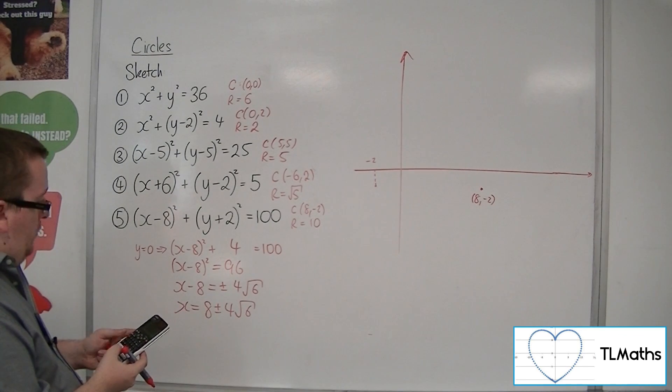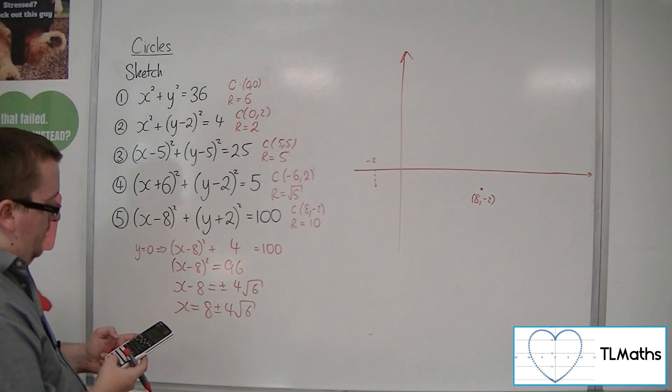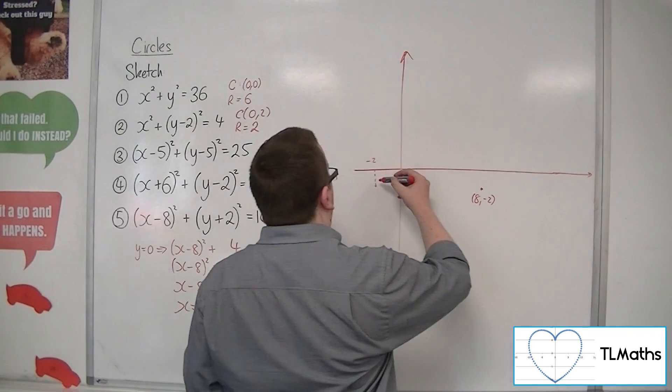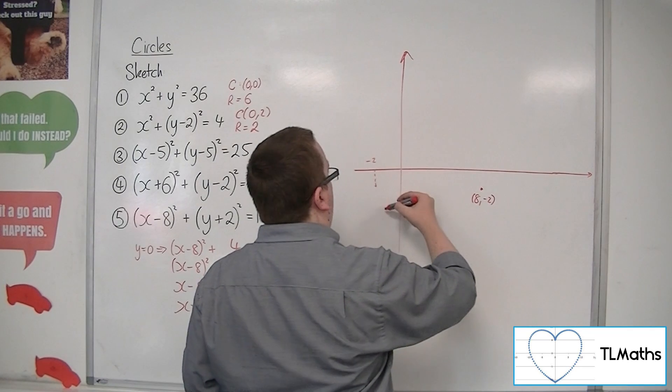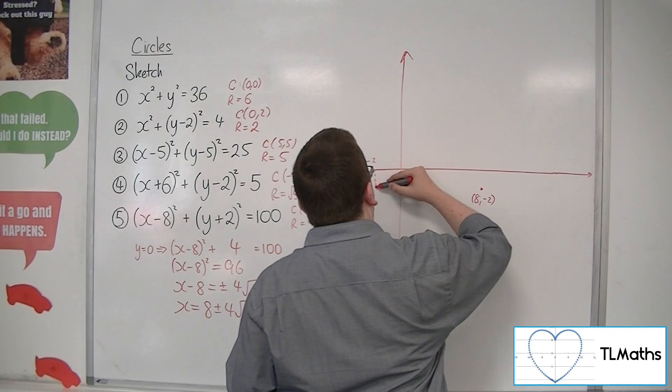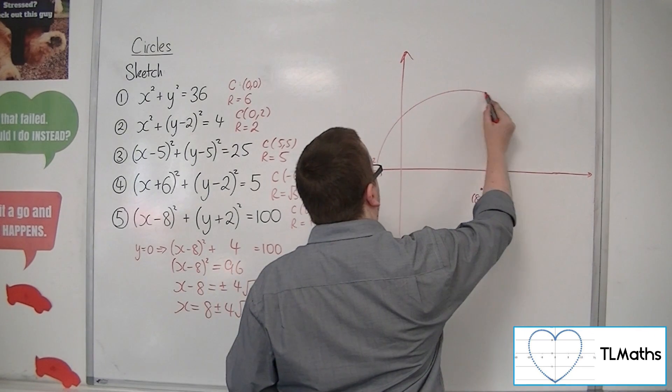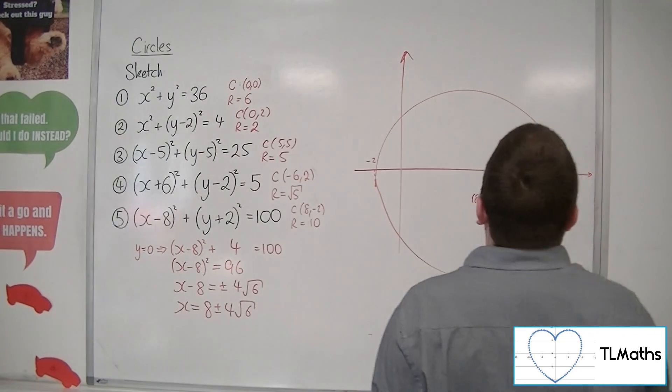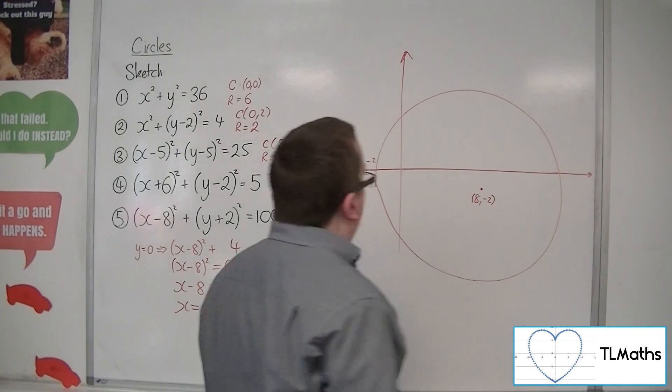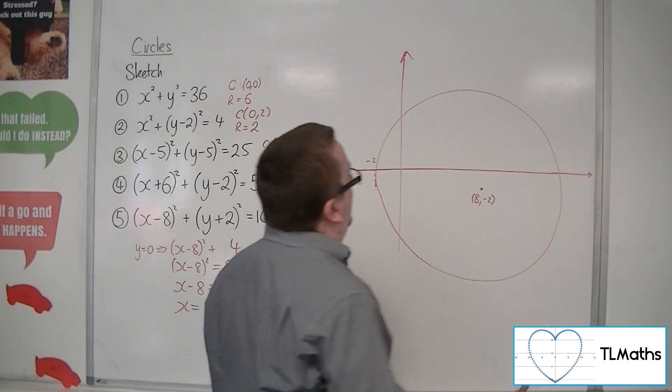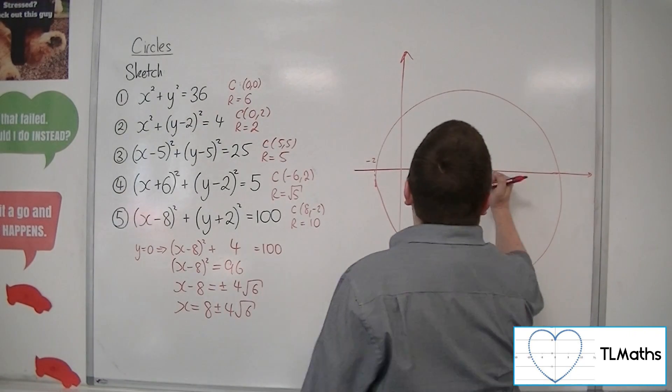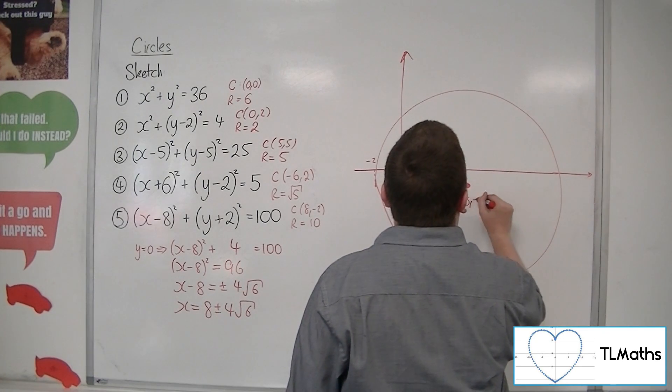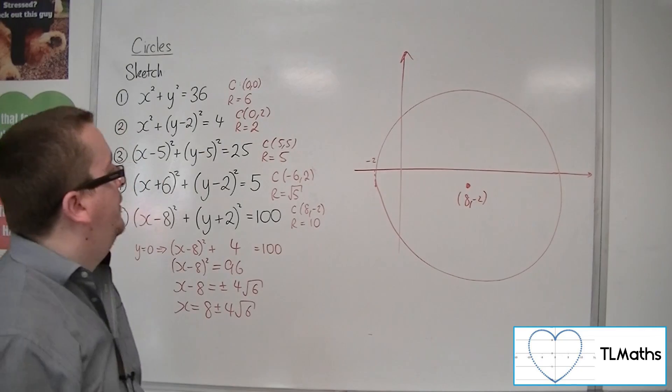So, 4 root 6 is 9.8 approximately. So, if you do 8, take away that value, you get minus 1.79. So, you're going to get something that's like this, aren't you? Now, that's pretty bad. But, you know, we can fudge that a little bit. Make it look a little bit more centralised.